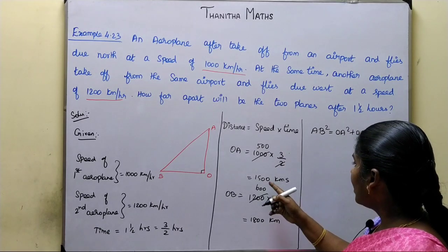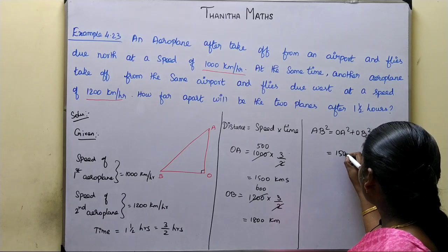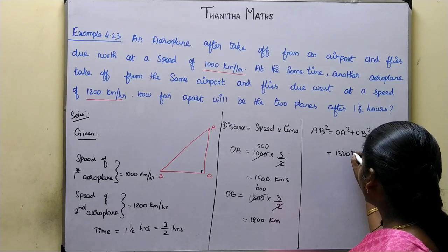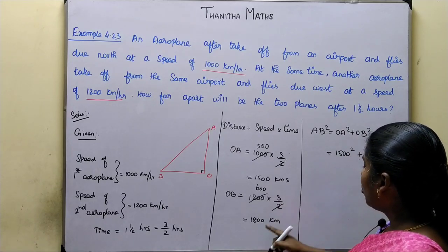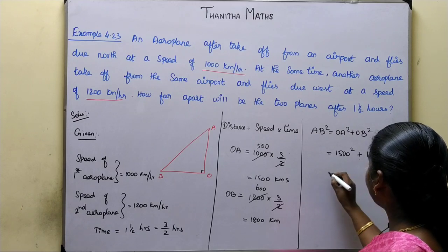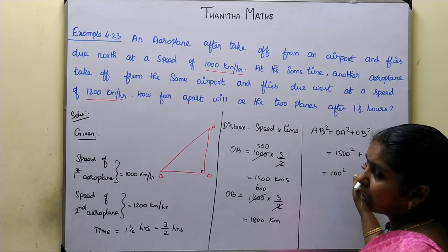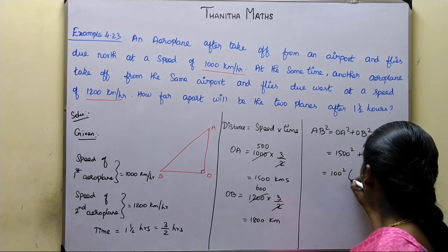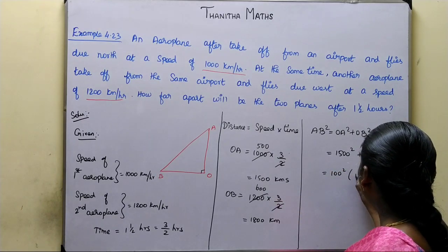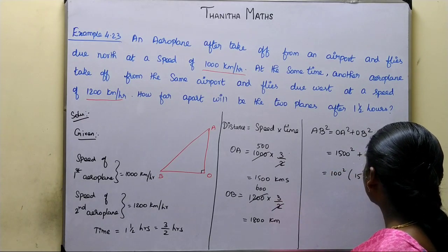So, OA is 1500, whole square. And OB is 1800, whole square. So we can write this as 100 square into 15 square plus 18 square.